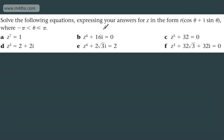So we're asked to solve the following equations, expressing your answer for z in the form r cos θ plus i sin θ, where θ is between negative and positive π. It's important to get an idea of this interval here, because this is going to determine our values of k. Let's go for this one right here.